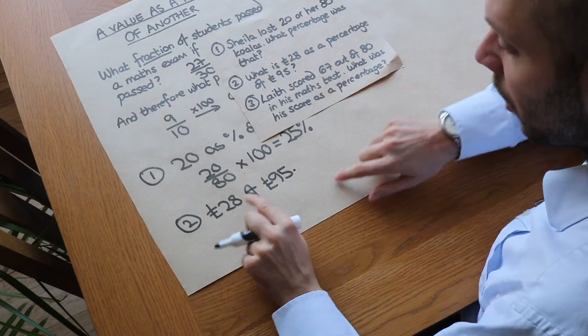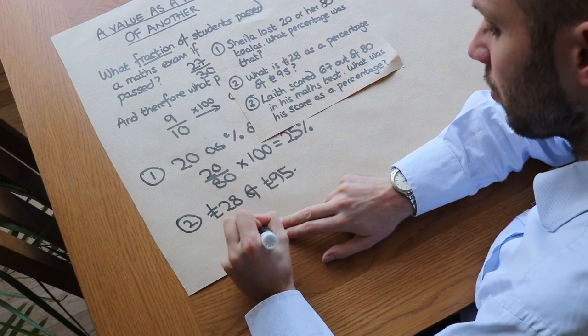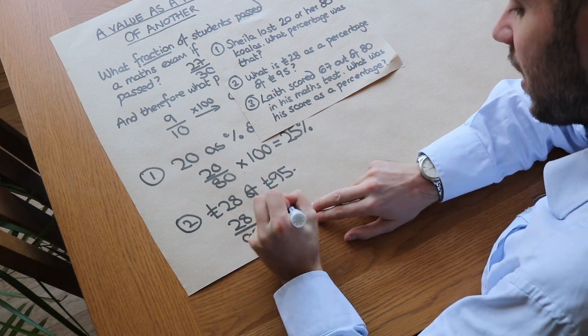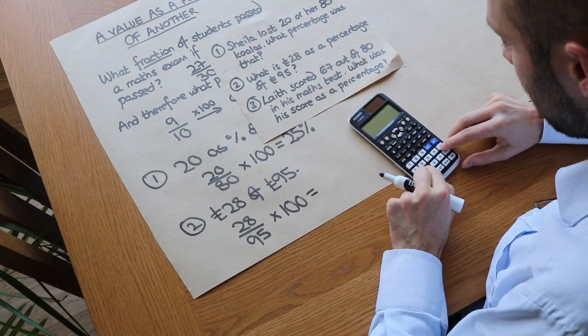So we work out what fraction 28 is of 95. So we do 28 out of 95, and then we convert that fraction to a percentage by just multiplying by 100. So I definitely need a calculator for that one.